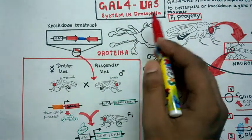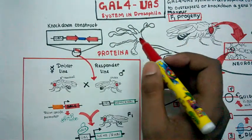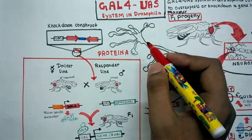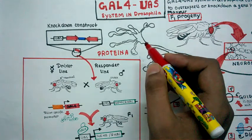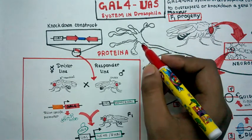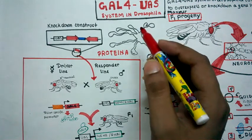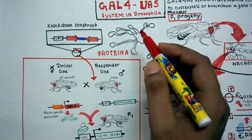In my earlier video, I talked about the GAL4-UAS system in Drosophila and how it works. With this system, we can actually overexpress or knock down a particular gene of our interest.